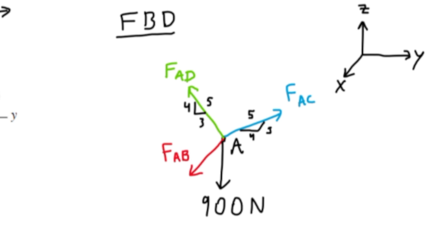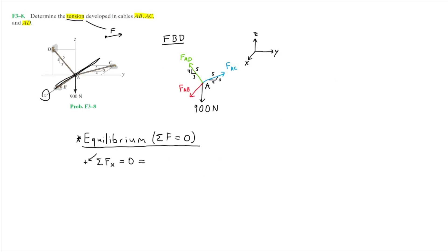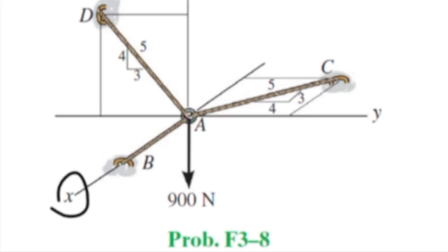Looking at the free body diagram, force AB acts along the x direction since cable AB is shown along the x direction, and it points towards the positive x direction, so this is simply positive FAB. Next, notice that cable AC also has a component along the x axis.